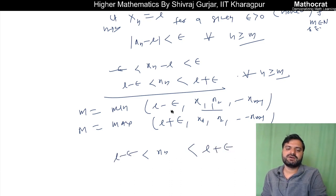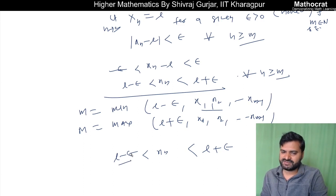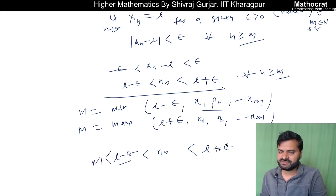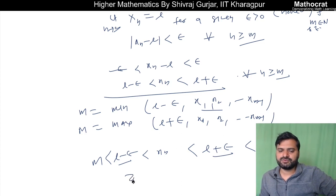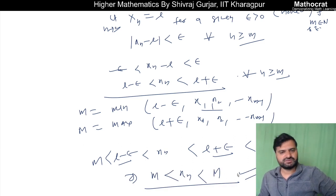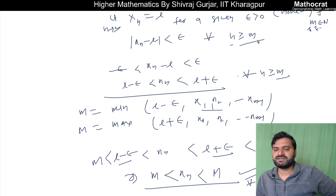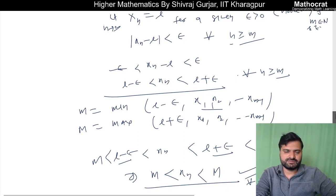So we take small m as the minimum of L minus epsilon, x1, x2, and so on. We call capital M the maximum of L plus epsilon, x1, x2, up to x_{m-1}. From this, we can say that xn lies between small m and capital M, so xn is bounded. This is valid for every n, so this is the simple concept: a convergent sequence is bounded.